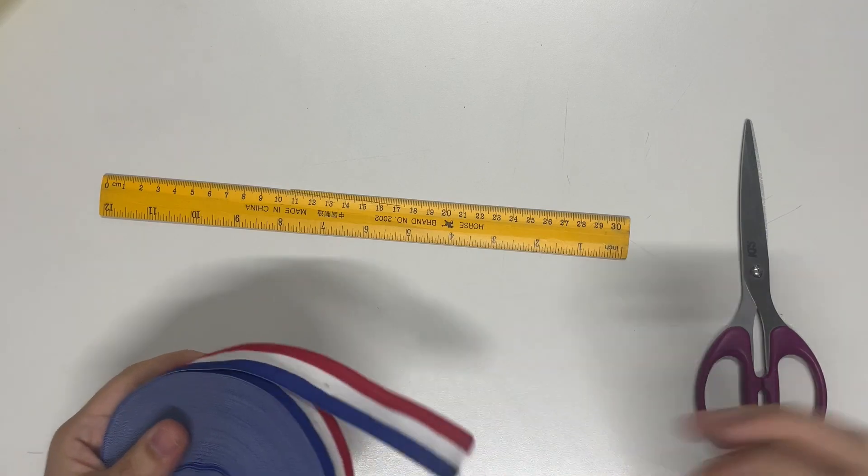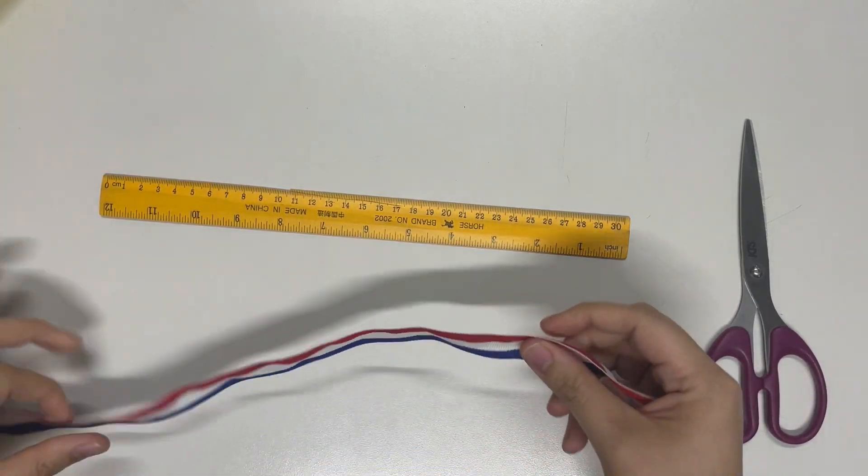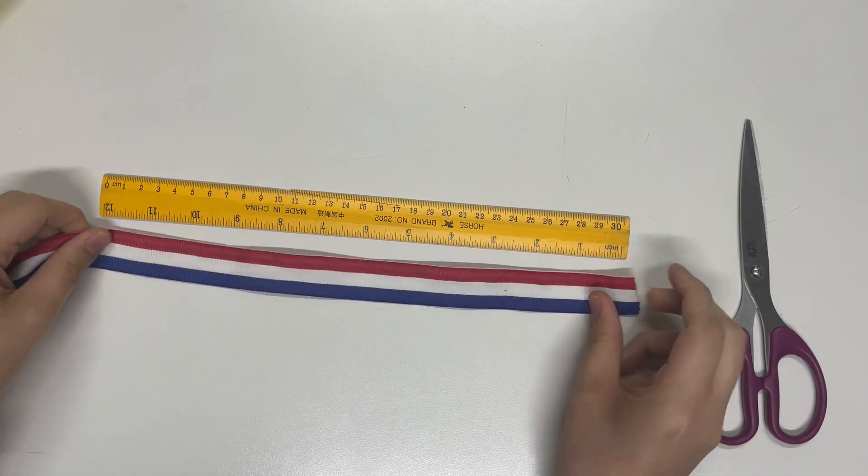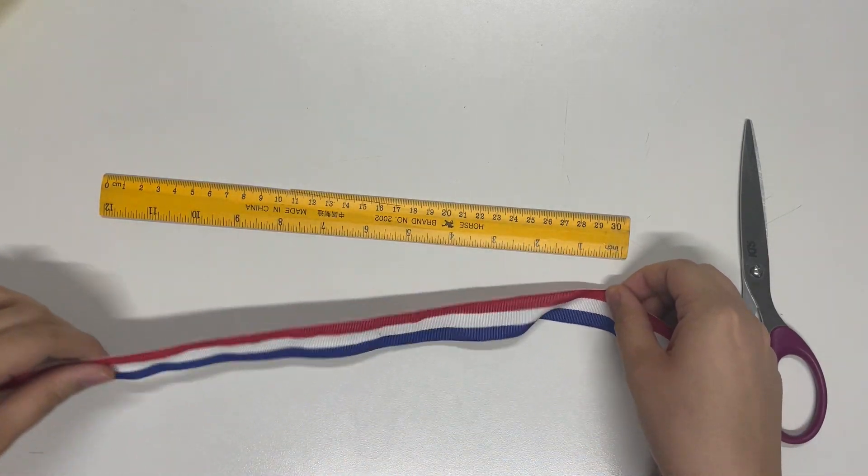Now take our ribbon and measure three feet of ribbon and cut. So three feet, that's 36 inches.